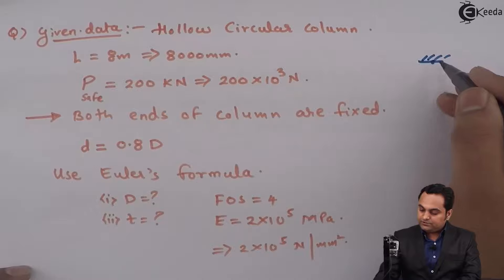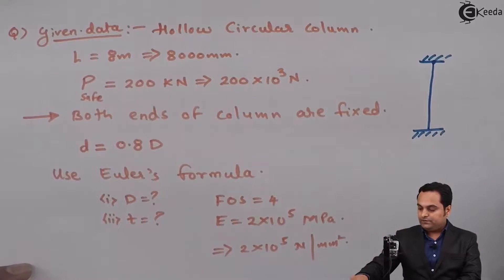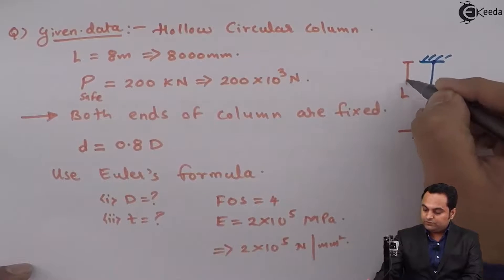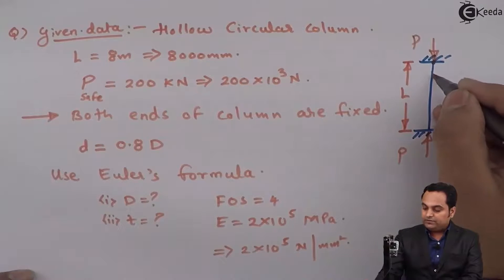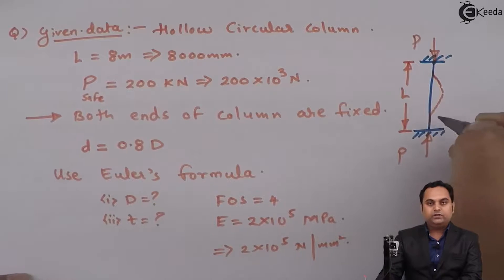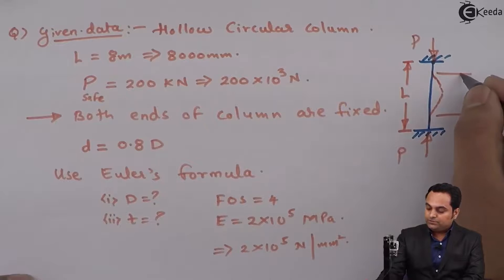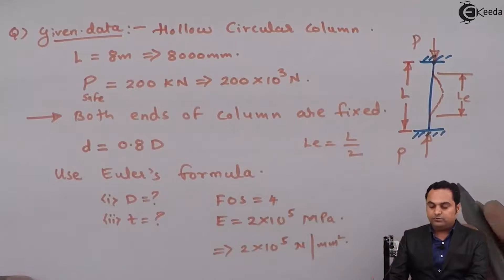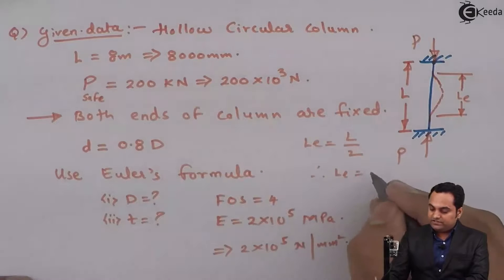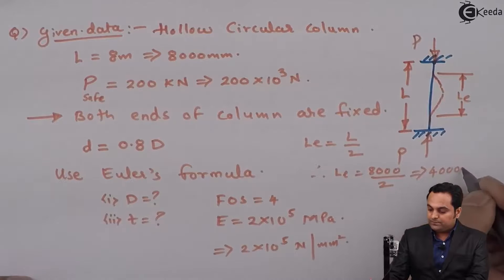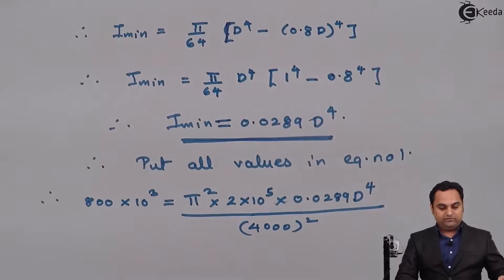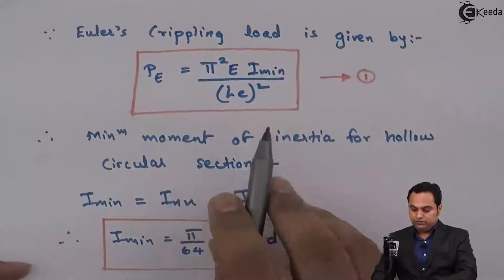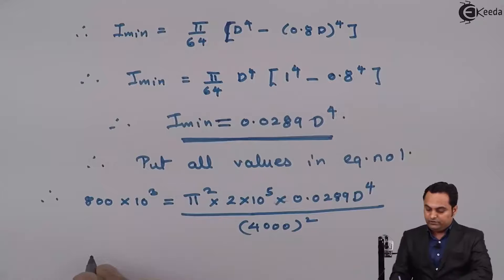Both ends of the column are fixed. For a fixed-fixed column, the column bends away from the fixed ends, and the effective length is taken as L/2, that is half the actual length. Since the length is 8000 mm, the effective length is 4000 mm. I will put this value of 4000 mm squared in the denominator.